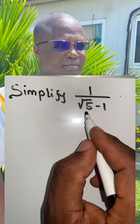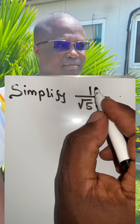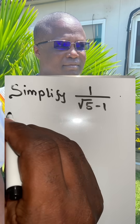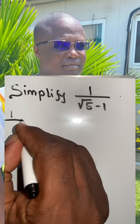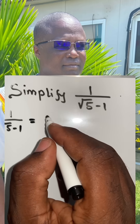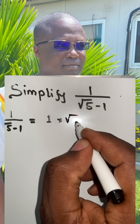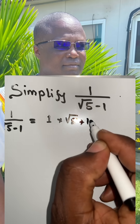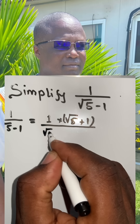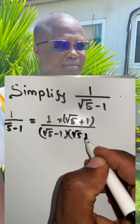So to simplify this expression, we need to rationalize the denominator by multiplying the top and the bottom by the conjugate of the denominator. So the original expression 1 over root 5 minus 1 becomes 1 times the conjugate of the denominator, which is root 5 plus 1, divided by the denominator root 5 minus 1 times its conjugate, which is root 5 plus 1.